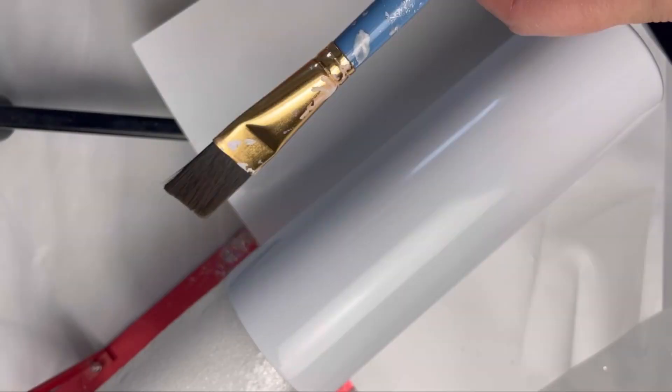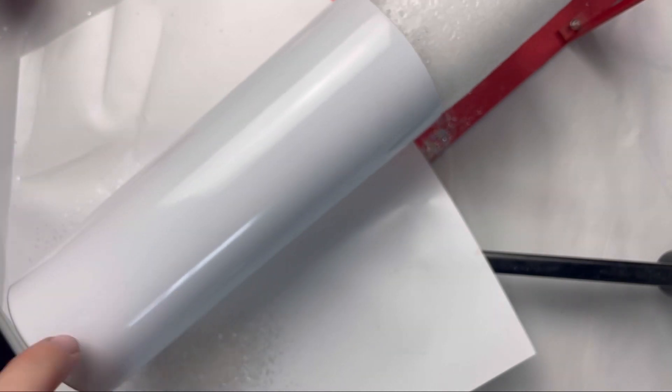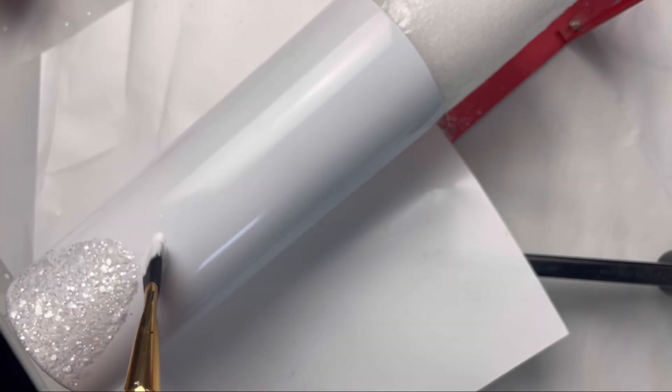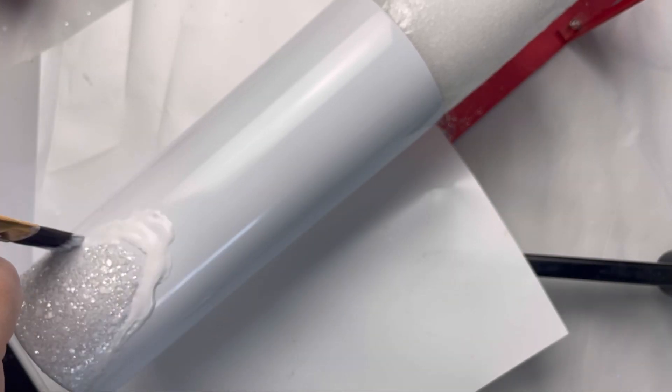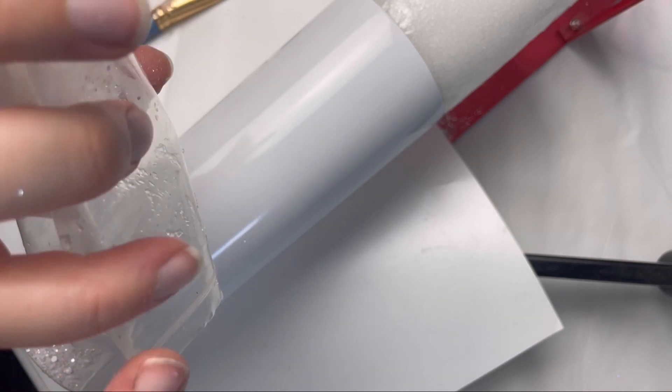Hi Art Besties! In this video I'm going to show you how I made this geode inspired tumbler using Mod Podge, glitter, and a little bit of resin. So first, we're going to take the Mod Podge and we're just going to paint the tumbler where we want the glitter to be.